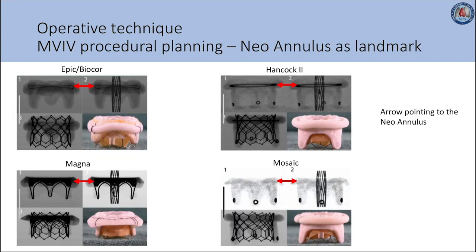Here we include some examples of common mitral surgical valves: the Epic or Biocore, Hancock II, Magna, and Mosaic. The red arrow in each of the figures depicts the level of the sewing ring, which is also the level of the neoannulus. In Hancock II and Magna, the level of the sewing ring is easily identifiable. However, identification of this level can be challenging in certain valves or patient populations.